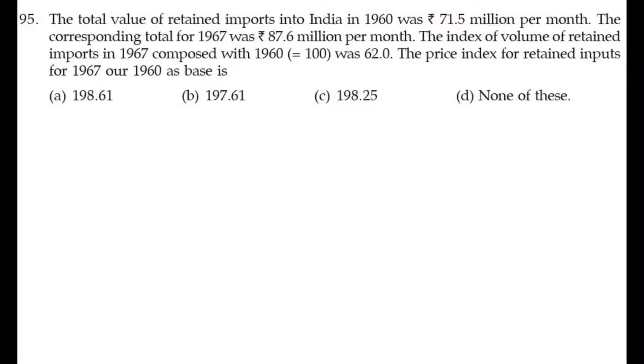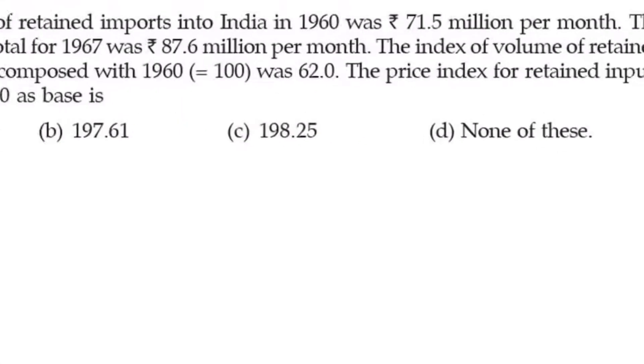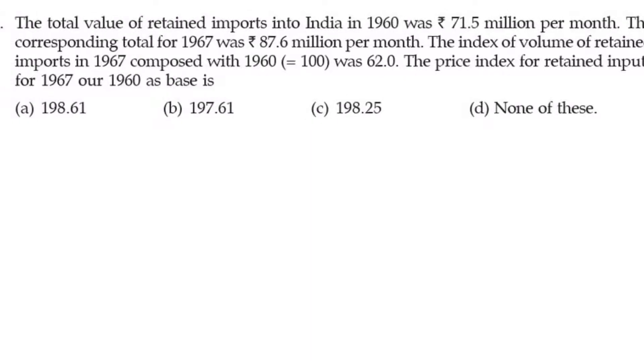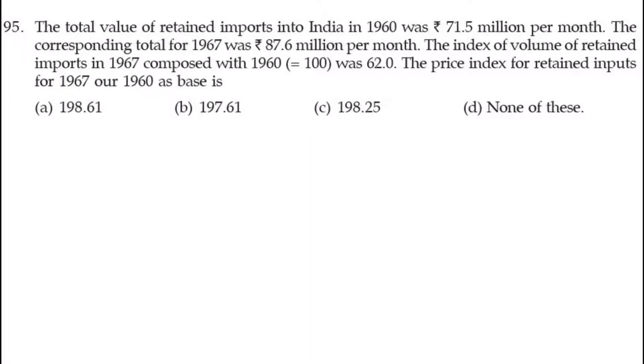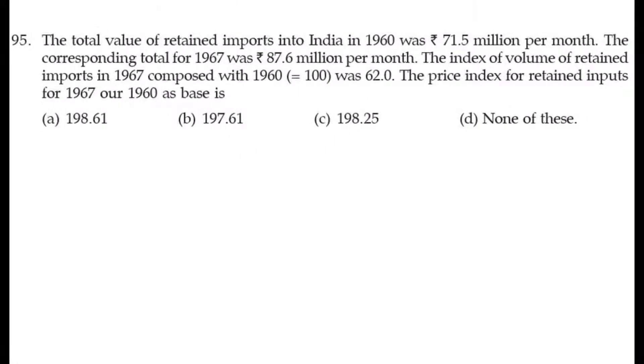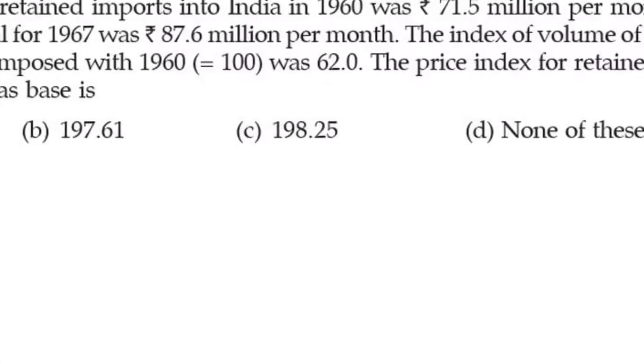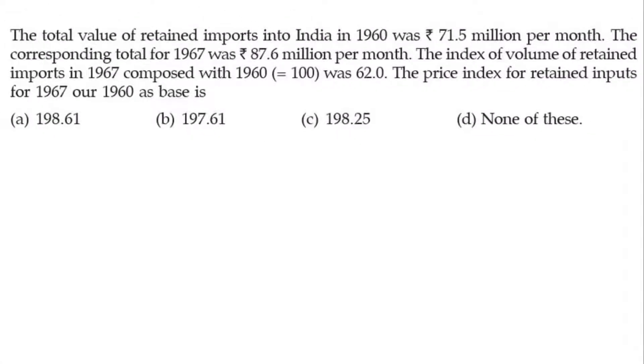So total value increased from ₹71.5 to ₹87.6, but the index of volume reduced from 100 to 62. In 1967, the index number of quantity is 62.